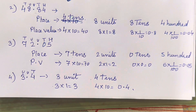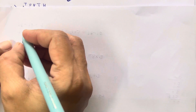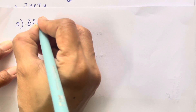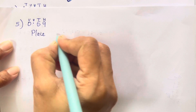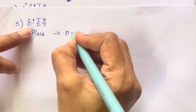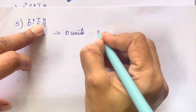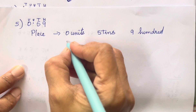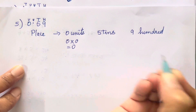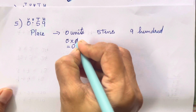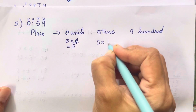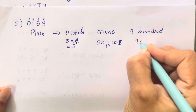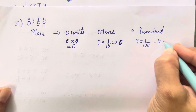Let's solve the fifth and last one: 0.59. Units, tenths, and hundredths. Place: 0 in the units place, 5 in the tenths place, 9 in the hundredths place. Place values: 0×1 = 0; 5×(1/10) = 0.5; 9×(1/100) = 0.09.